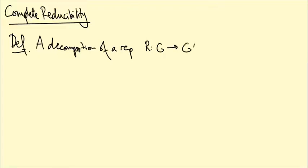One of the key ways we'll study representations is by decomposing them into smaller representations. A decomposition of a representation R from G to GL(n,C) is a splitting of C^n.